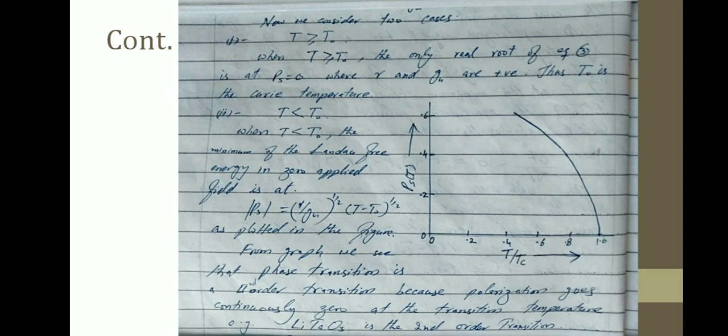When Pₛ² is plotted against T/Tc, the polarization — which is the control parameter of the ferroelectric to paraelectric transition — changes continuously and becomes zero continuously, with no discontinuity. From the graph we see that the phase transition is second order because polarization goes continuously to zero at the transition temperature. For example, LiTaO₃ is a second order transition.